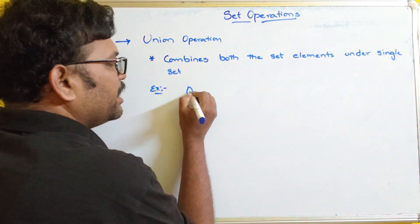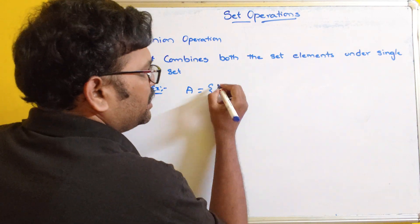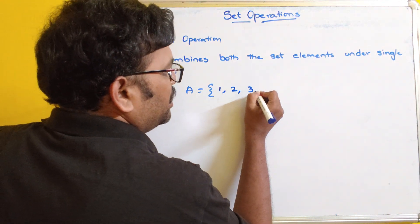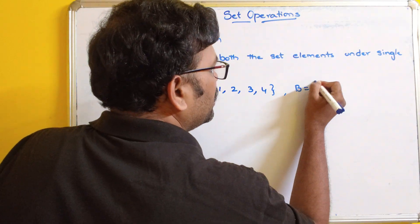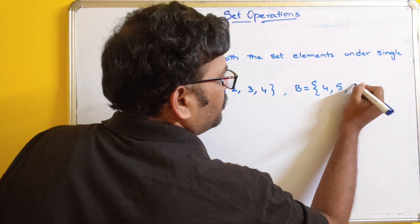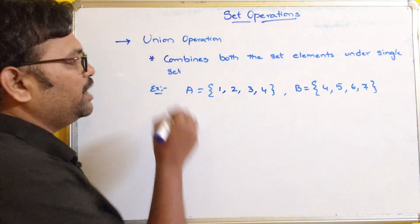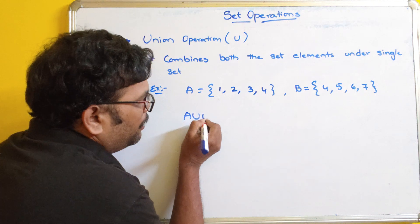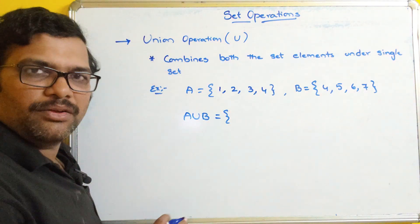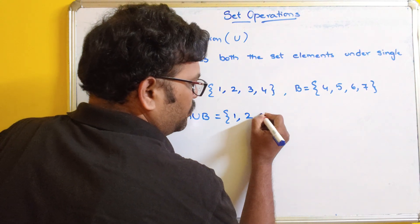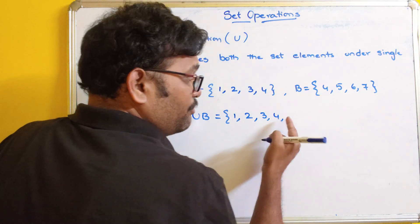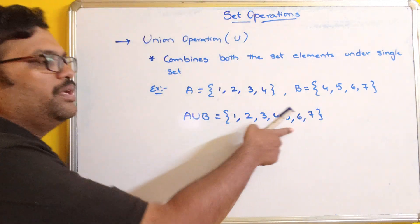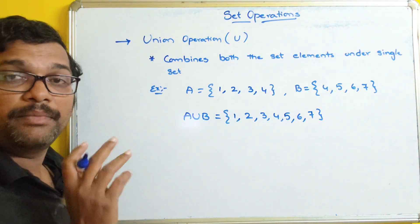Let us take an example. Let set A equal to {1, 2, 3, 4} and set B equal to {4, 5, 6, 7}. This union operation is represented with the symbol U. So A union B forms a single set by combining the elements of both sets. Since 4 appears in both, we list it only once. So A union B becomes {1, 2, 3, 4, 5, 6, 7}. This is the union of the two sets A and B — it combines all elements of both sets.